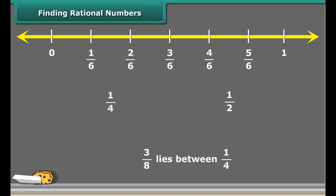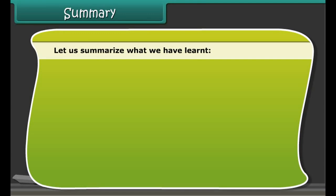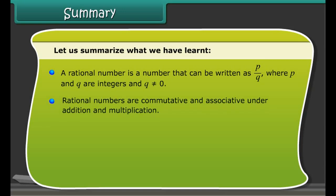Did you know that there are infinitely many rational numbers between any two rational numbers? Let us find a rational number between two rational numbers using the mean method. We can say three by eight lies between one by four and one by two. First, find the sum of these numbers, which comes out to be three by four. Now divide this sum by two — division flips the second number and the sign changes to multiplication.